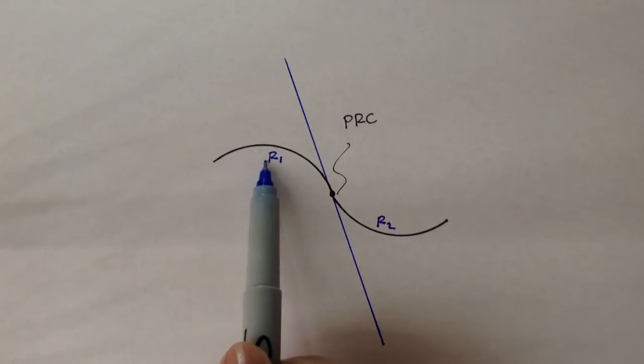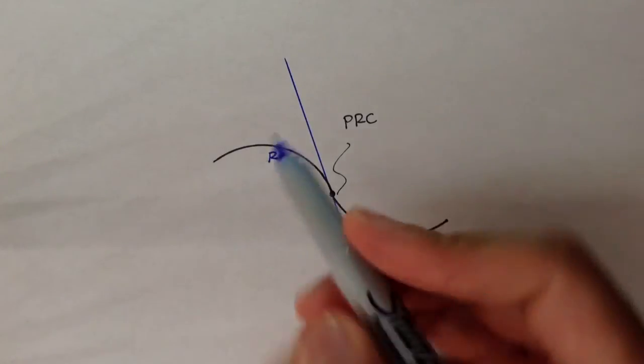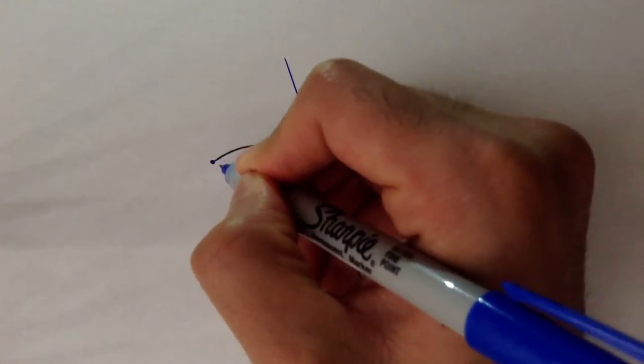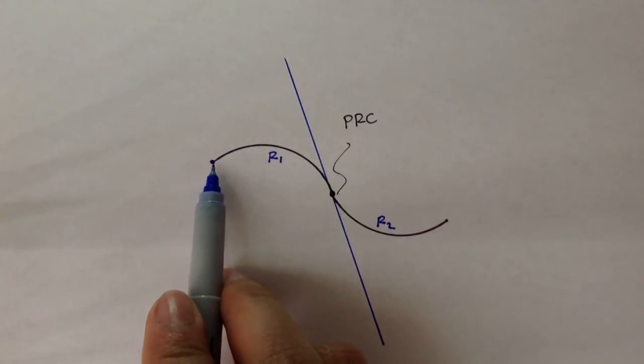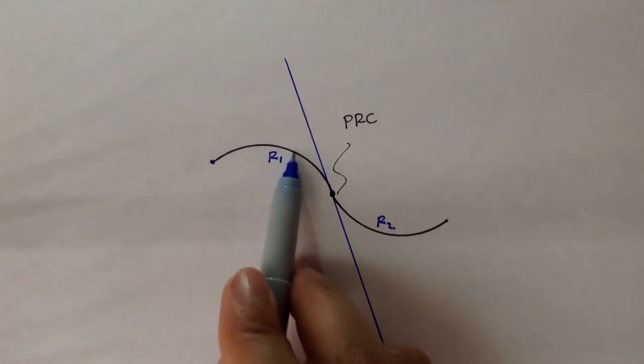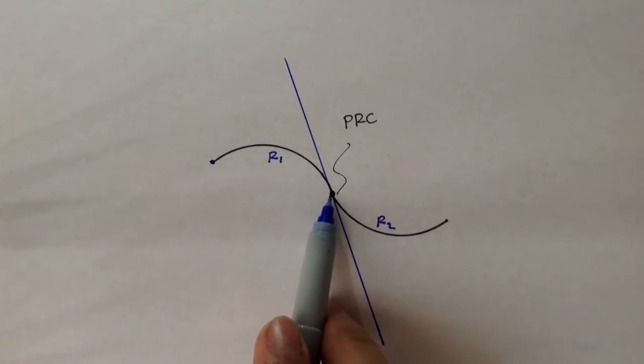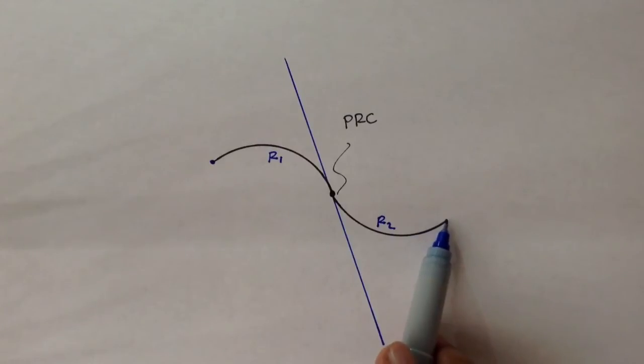So this is curve 1, and this is curve 2, and this would be your BC1, or beginning of curve 1, and you go along this path, and this would be EC1, or end of curve 1. But at this special point, it's also the BC2, the beginning of curve 2, and then this would be EC2.